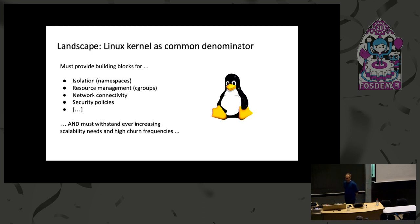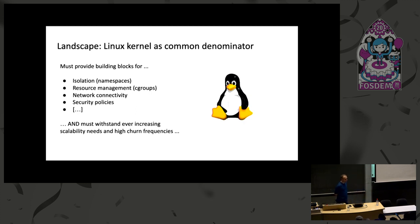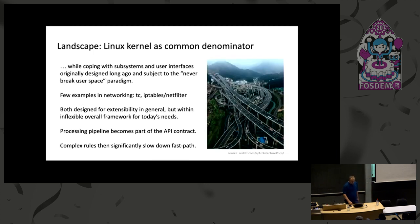The kernel has to provide network connectivity — in the case of network namespaces, it's either through Veth devices, IPvLAN devices, or various others — and security policies, which can be done through Linux security modules or firewall policies. All of this has to withstand increasing scalability needs and higher container churn frequencies, while coping with subsystems that have existed in the kernel for 10 years or more, designed back then.